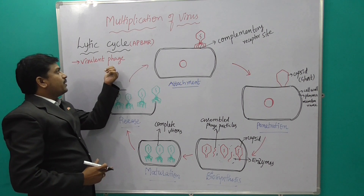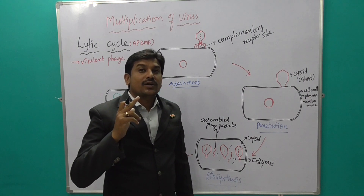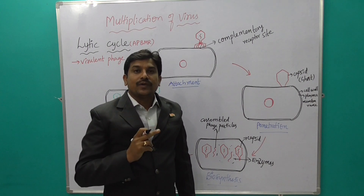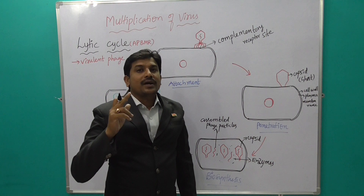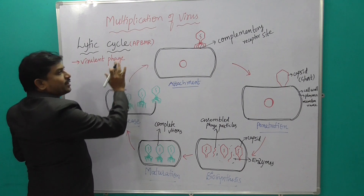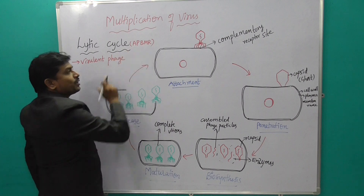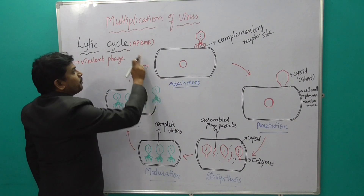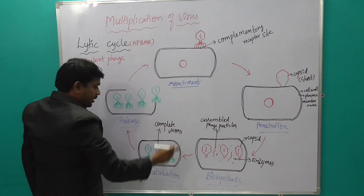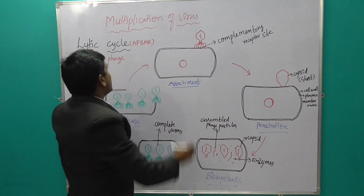The lytic cycle is also called the virulent phase. T-even bacteriophages — T2, T4, T6 — attack E. coli bacteria, causing lysis of the cell, which is called the lytic cycle. It has five stages, remembered by the code APBMR: A for Attachment, P for Penetration, B for Biosynthesis, M for Maturation, and R for Release.